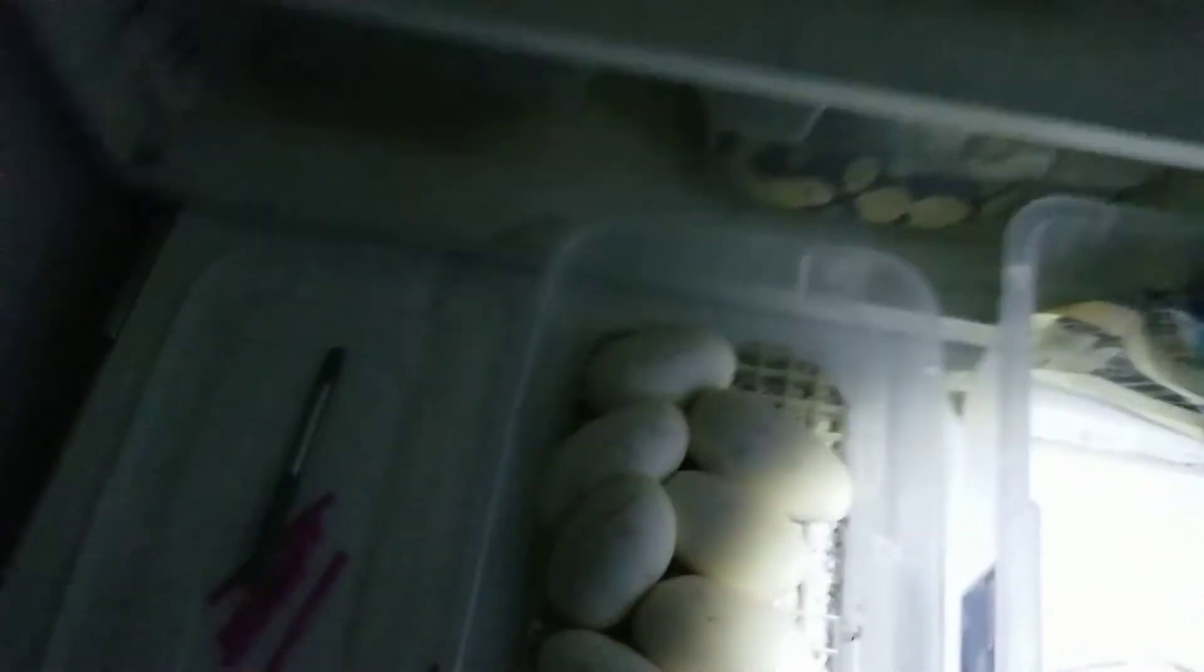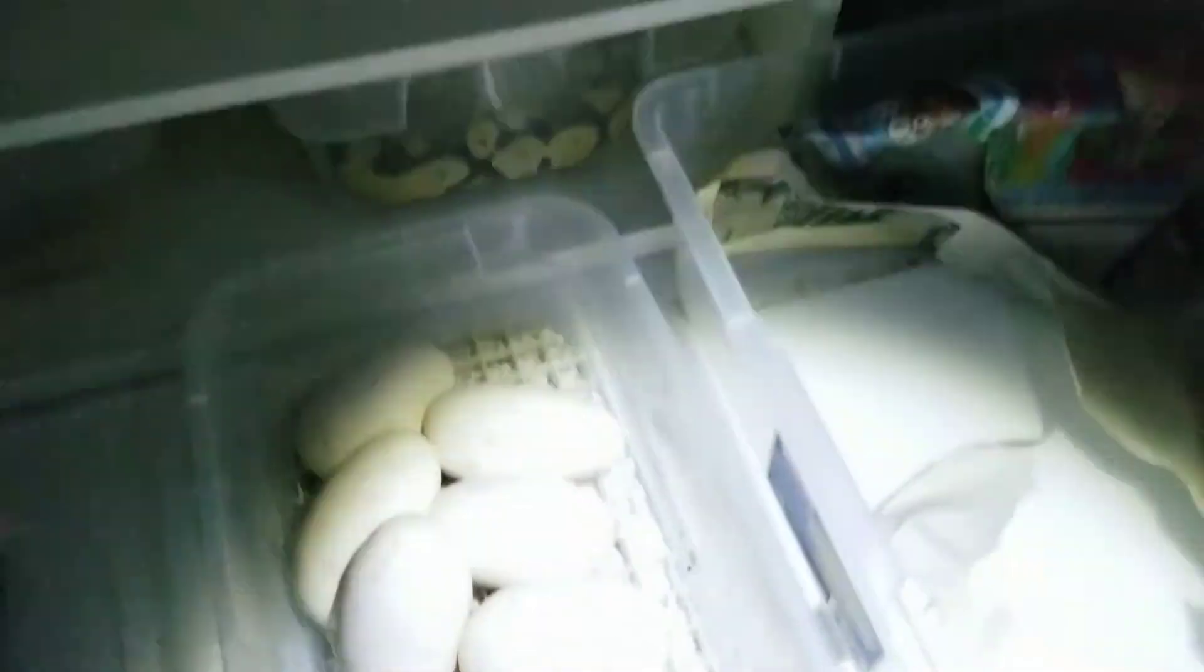Now let's candle them to make sure they're all healthy, strong, and viable. Let me give you a closer look this time. As you can see there are veins. More veins. A network of veins. Veins. Veins. Veins. And veins. That's awesome. Seven fertile eggs.